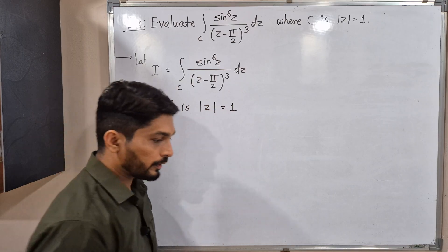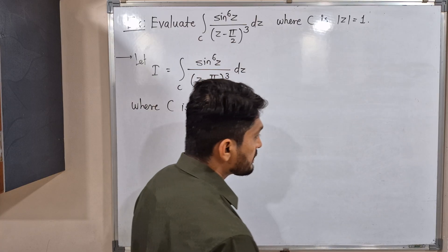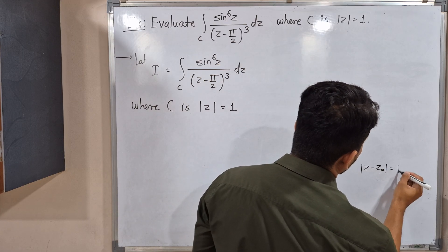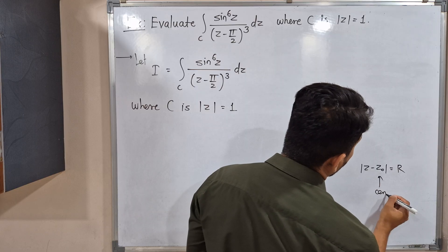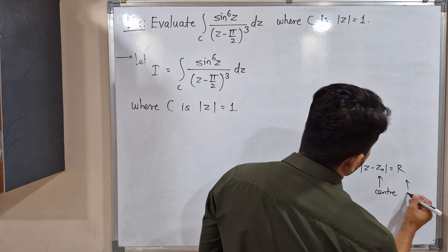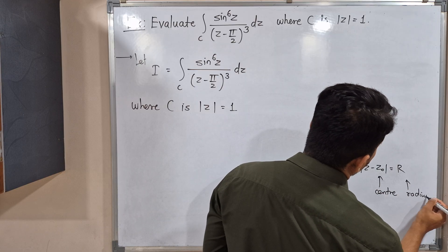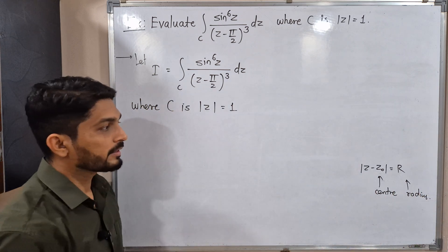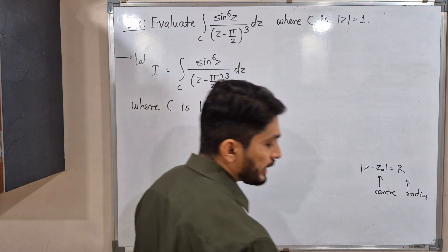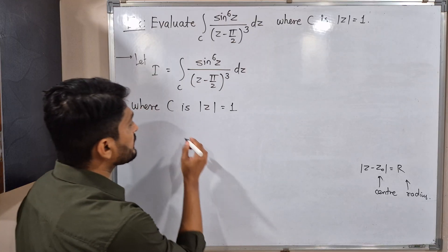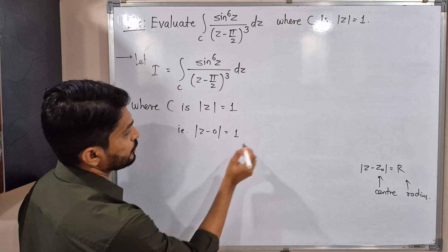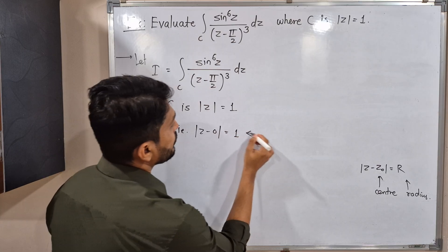Do you know this is the equation of what? It is a standard form of equation of a circle. This is the standard form where center is z naught and radius is r. Here we have mod z minus 0 is equal to 1. So this is a circle.